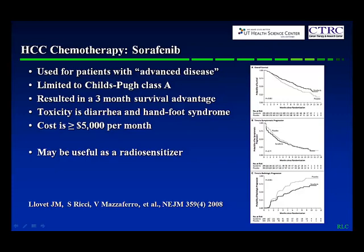Sorafenib, which is a dirty tyrosine kinase inhibitor affecting many pathways, is used for patients with advanced disease — those not eligible for any of the other fairly common treatments, not eligible for transplant, but still with good functional status, Child-Pugh class A. When the study was reported in the New England Journal of Medicine in 2008, it was exciting because it showed about a three-month survival advantage. That sounds very small, but you have to put it in context: over 30 years and over 100 published trials, none had shown a survival advantage. The primary toxicity is diarrhea and hand-foot syndrome, and the cost is well above $5,000 per month, compared to about $13,000 for TACE or $11,000 for SBRT. There are also good reasons to look at sorafenib as a radiosensitizer.